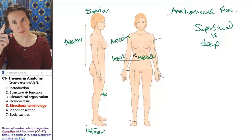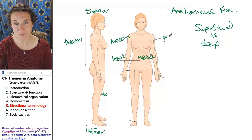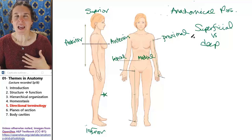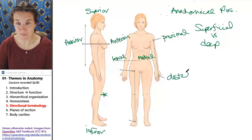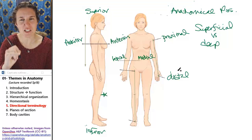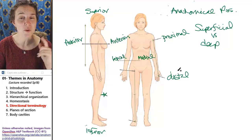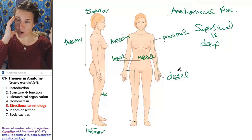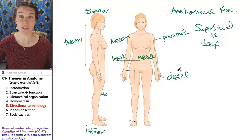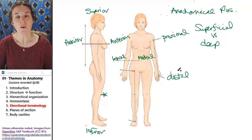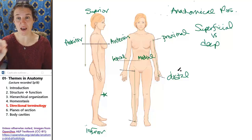Proximal and distal. Proximal is closer to an attachment point for a limb. It's safest to use proximal and distal only to describe position on a limb — on a leg or an arm — and use another word to describe everything else, though there will be exceptions. Proximal is closer to the joint, to the attachment point. Distal is farther away — distal is distant to that attachment point.